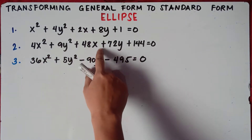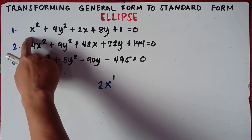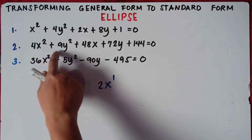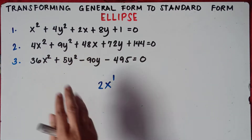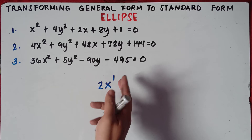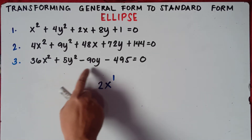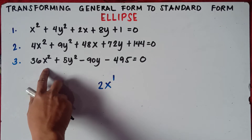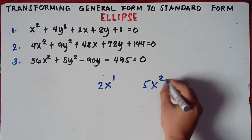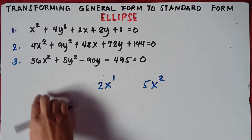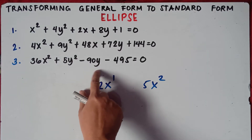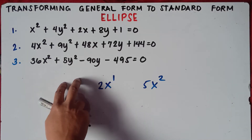Number 2 is more tricky because the coefficient before x squared is greater than 1, and we have larger numbers. For number 3, this was requested by our subscribers and followers — it is even trickier because we don't have the value of one linear term. We only have the quadratic term for x, so we have two quadratic terms but only one linear term.